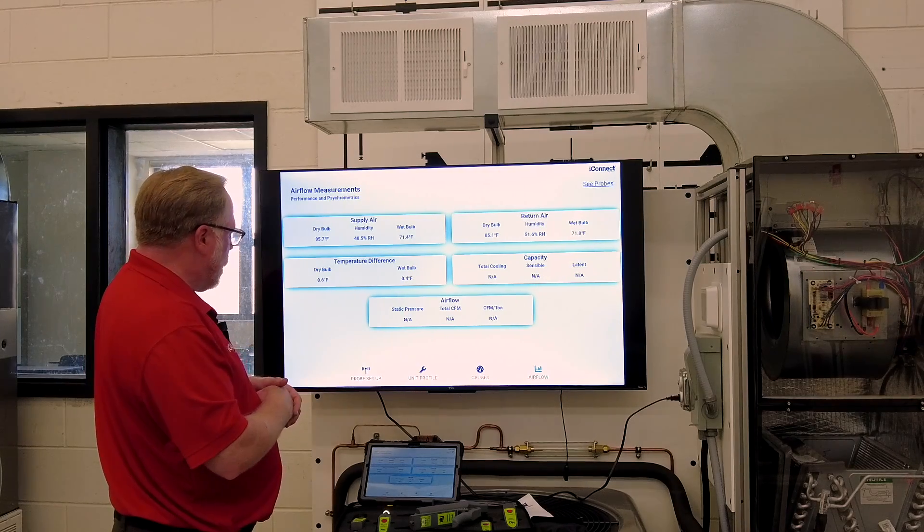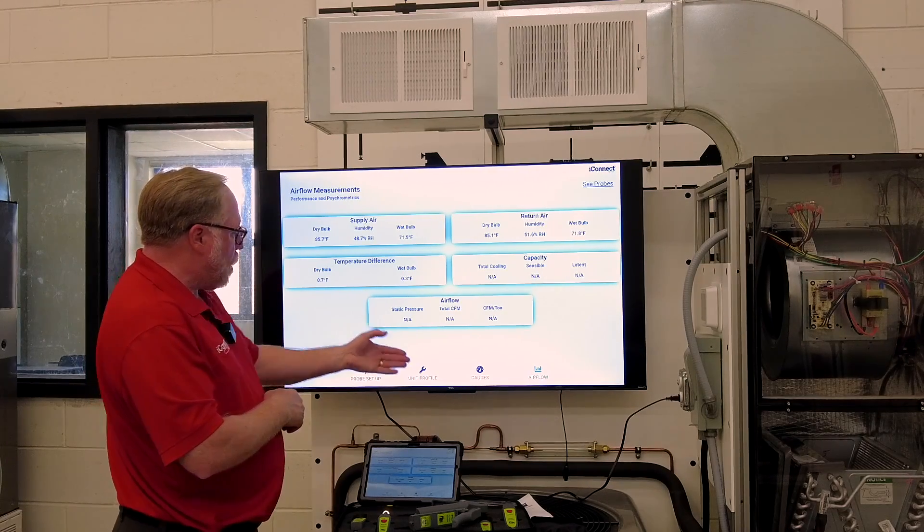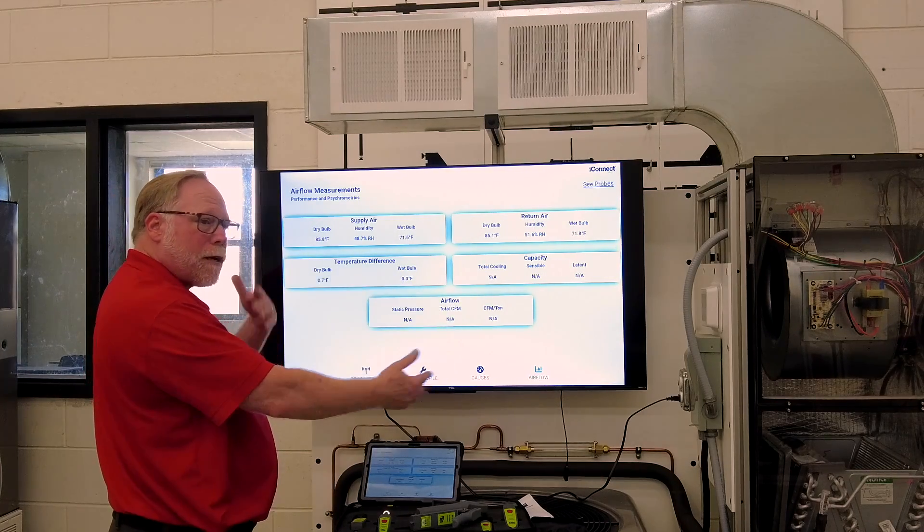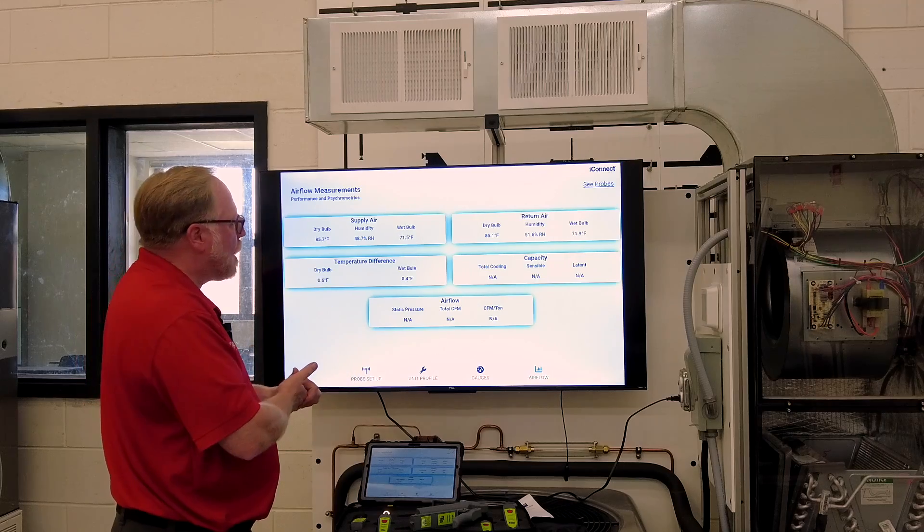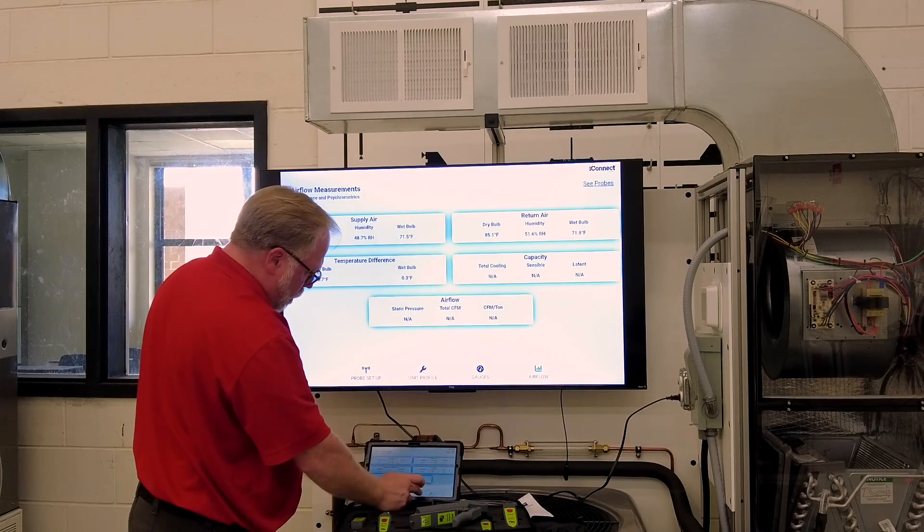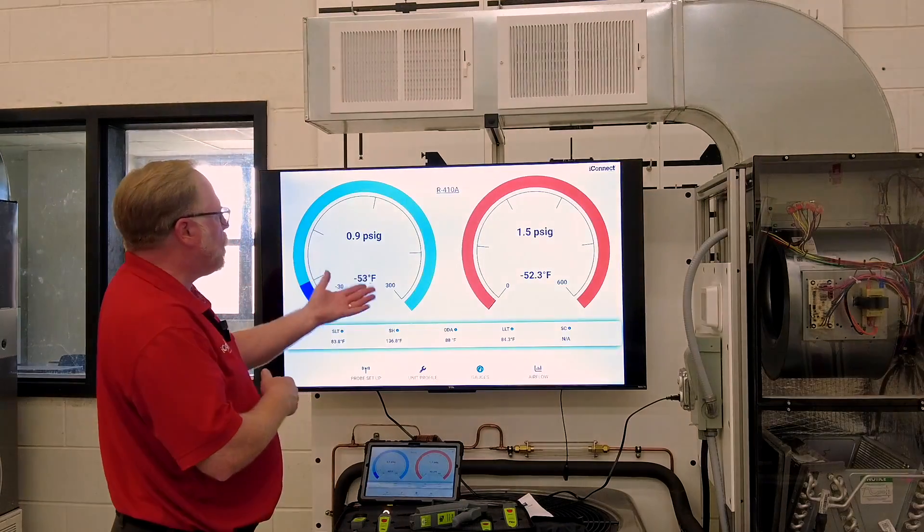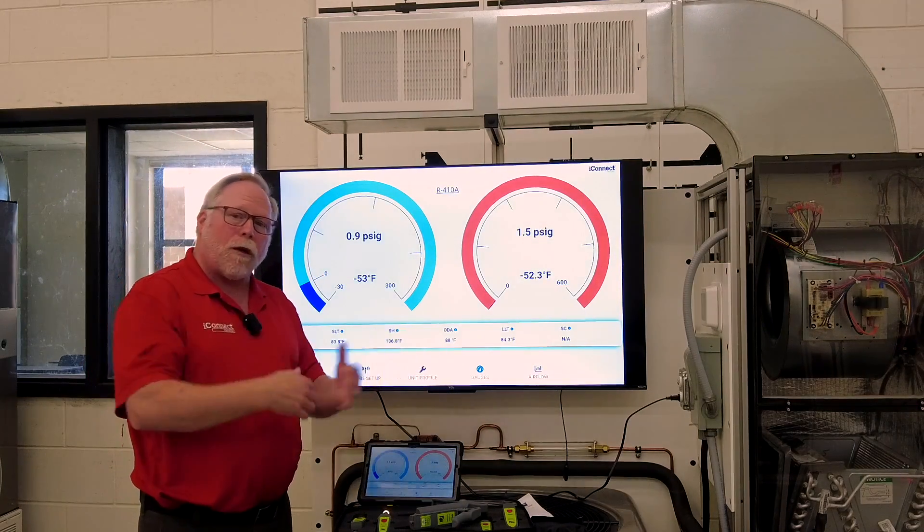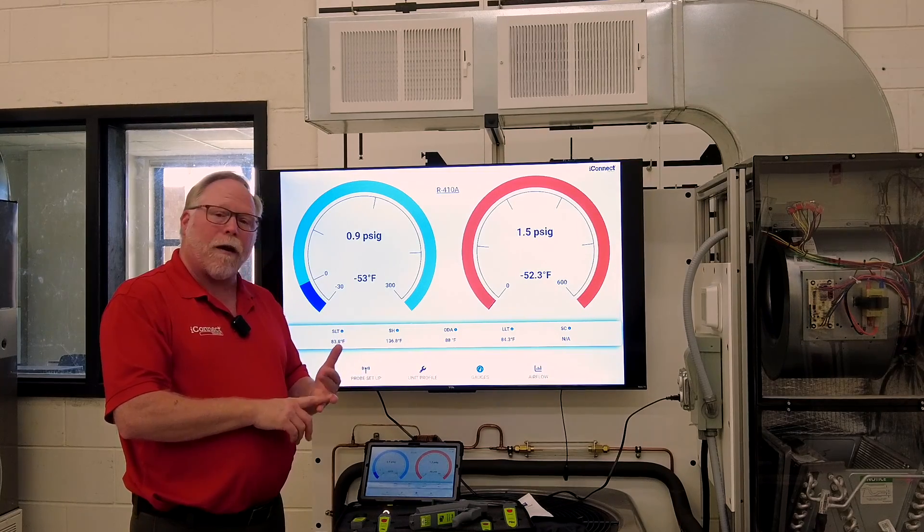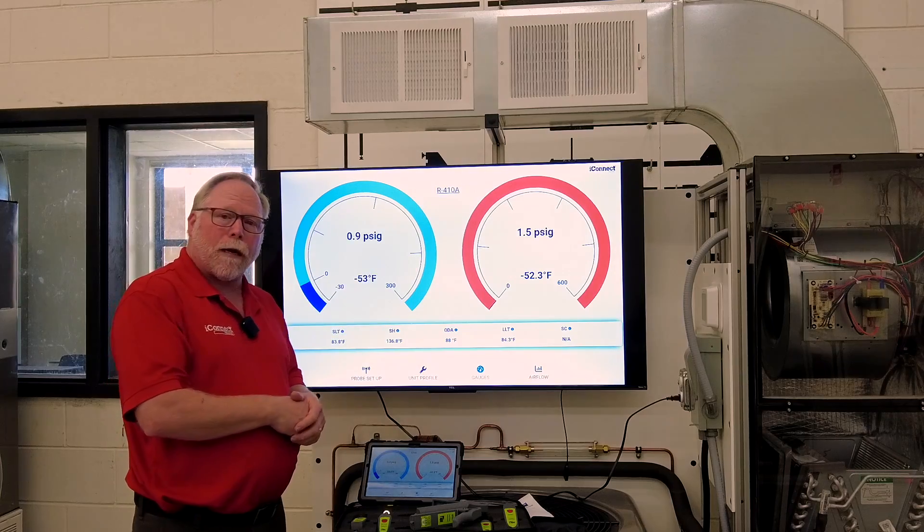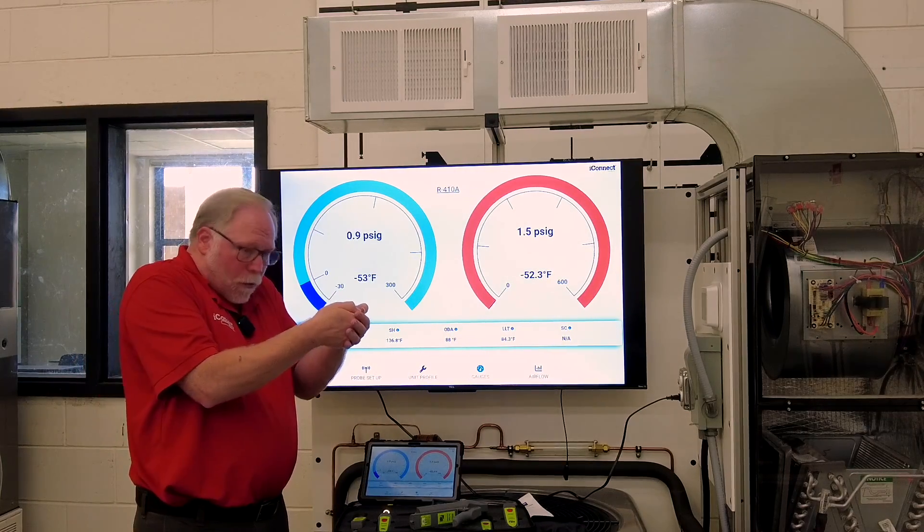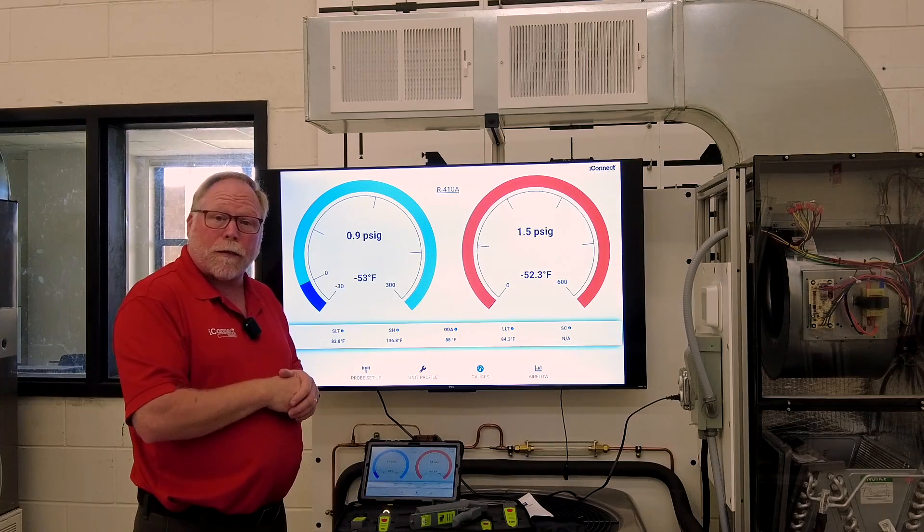So really, that's it. Once you set up the probes and you've done your unit profile, you'll never have to go back to those again unless you disconnect or add more probes. And you got two screens. You got the air side of the screen and you got the refrigerant side. And with that, you can teach pretty much every single principle on the refrigerant and air that you want up here on the screen and have all the students gathered around. They can see it while they're not having to crowd around a little gauge set or some little probe the teacher's holding.